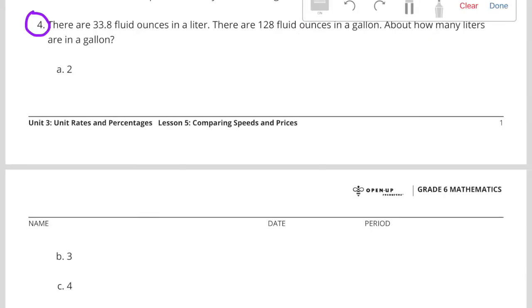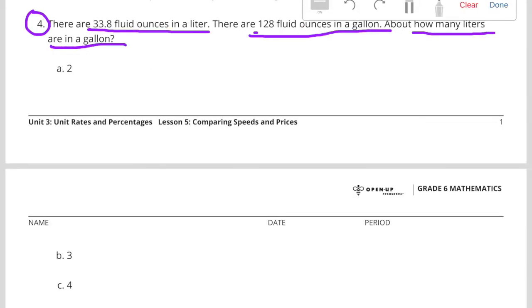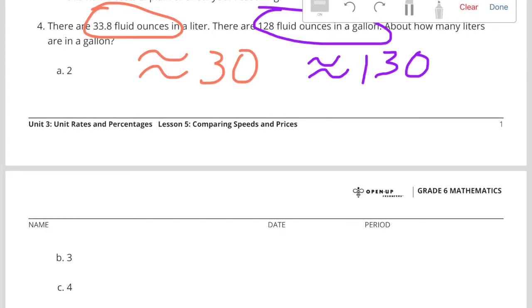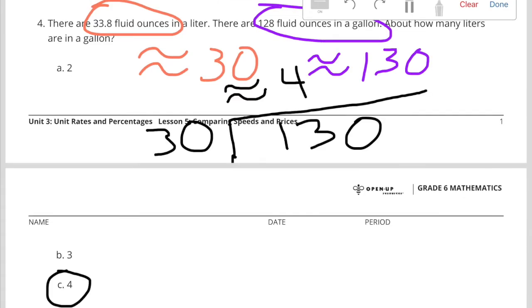Number 4: There are 33.8 fluid ounces in a liter. There are 128 fluid ounces in a gallon. About how many liters are in a gallon? Well, they're not asking for a precise answer, so I can estimate. I'm going to change 33.8 to 30 to make it easier. And I'm going to change 128 to 130 to make it easier. So 130 divided by 30 is about 4 with a little bit left over.